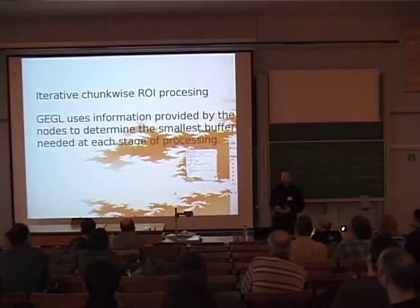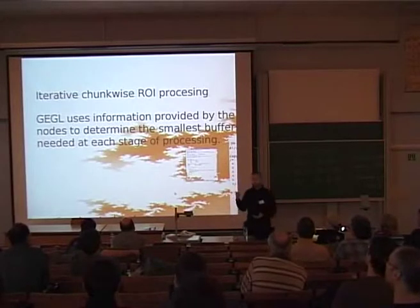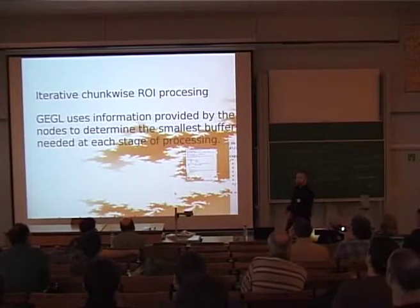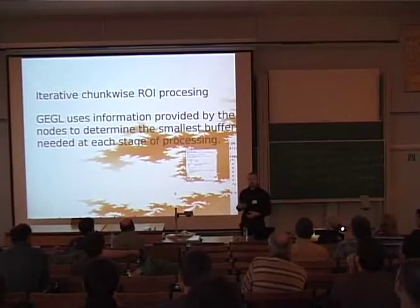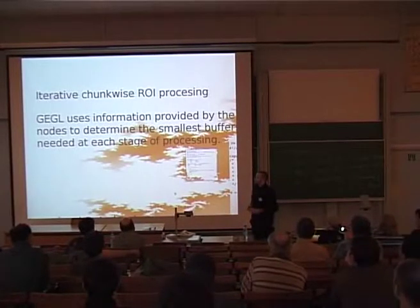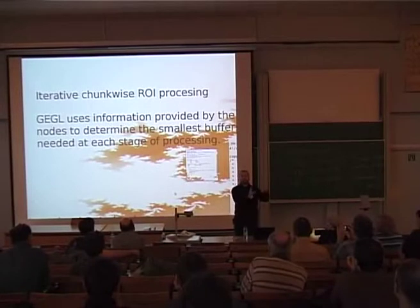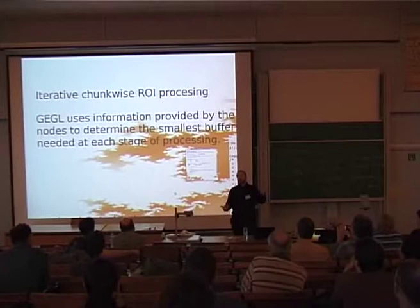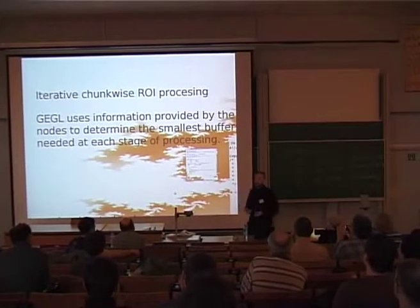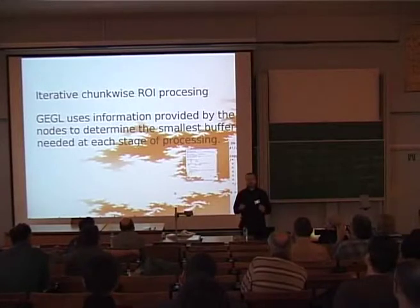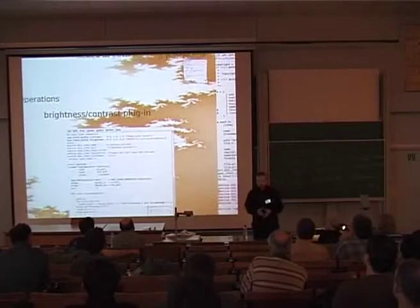GEGL currently does its processing in chunks. When rendering a large image, it starts by requesting small rectangles across the entire buffer — you probably saw this during the non-destructive editing demo where things updated in small chunks. Operations in nodes know what input data they need to compute a given rectangle, and they can report how a change in input affects the output rectangle. Using this, GEGL determines the smallest amount of buffers that need to be computed to satisfy a given rectangle request.